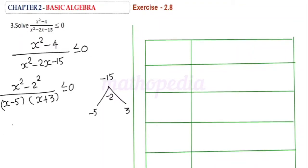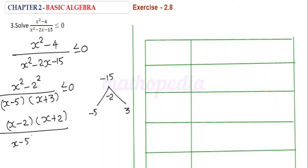The numerator is a² - b², which equals (a - b)(a + b). So the full expression becomes (x - 2)(x + 2) divided by (x - 5)(x + 3) ≤ 0.